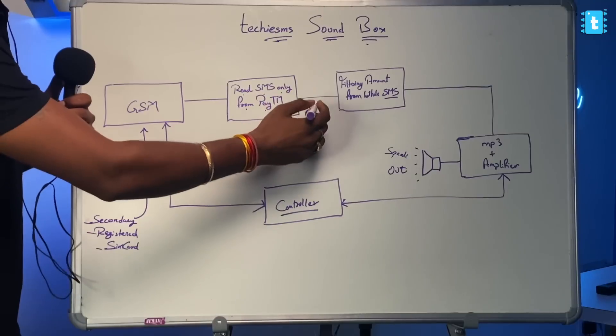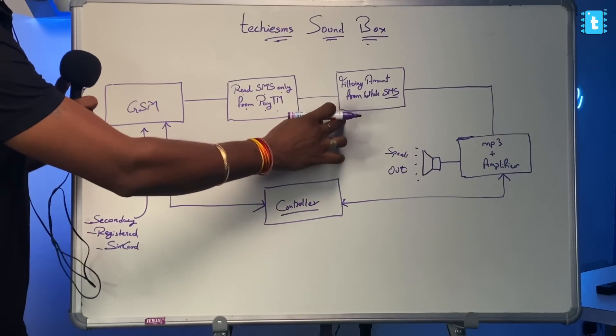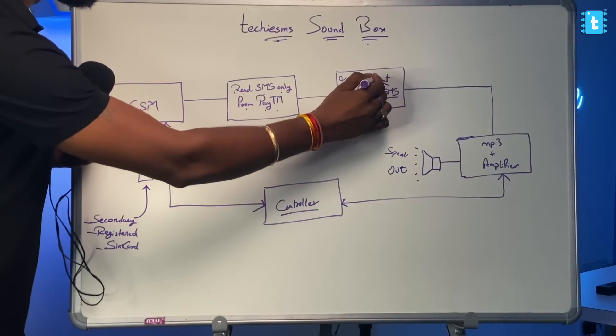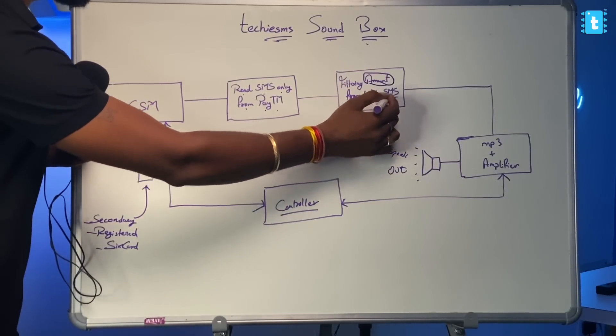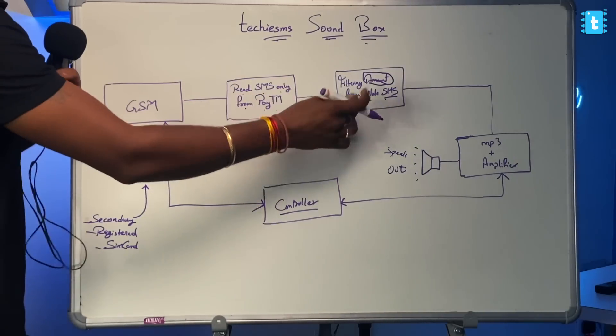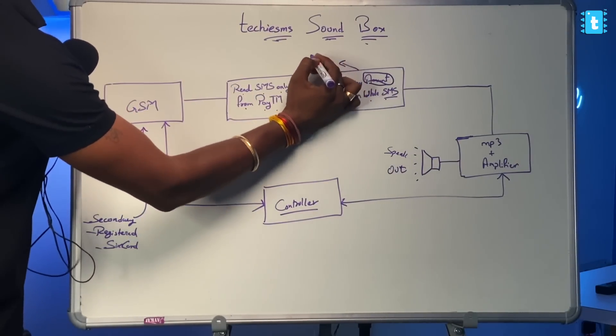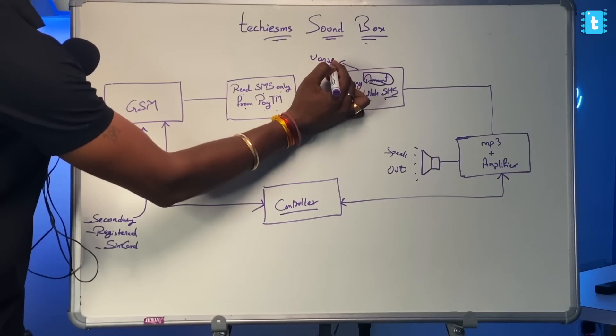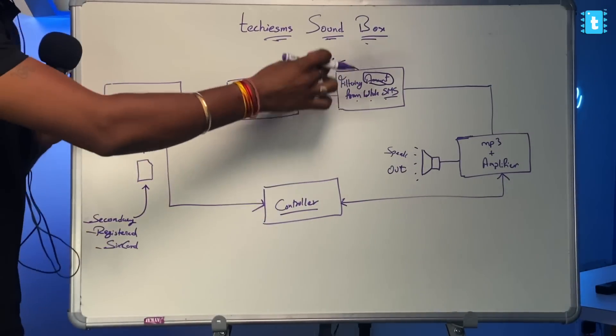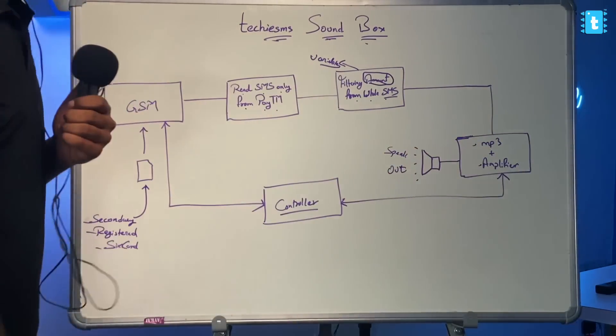After putting the filter, we are clear that we will be receiving SMS from Paytm only. So what we are doing is filtering out the amount from the whole SMS. The message we receive from Paytm has information like the date, time, transaction ID, and the amount received. Out of all those details, we are just interested in the amount in rupees. So by running a couple of for loops, we are filtering out that amount and storing it in a separate variable inside our code. Now we have the amount in rupees, and after that we pass that information to the MP3 module plus amplifier module.